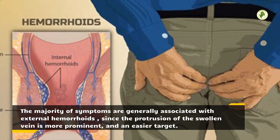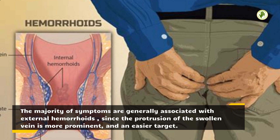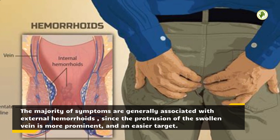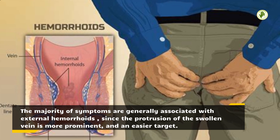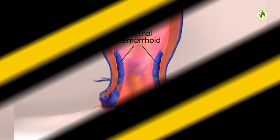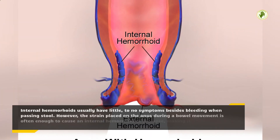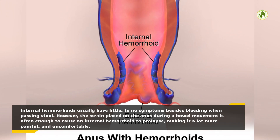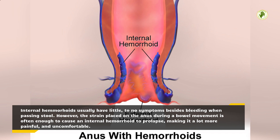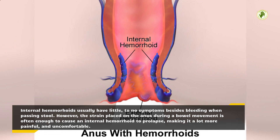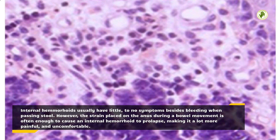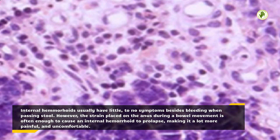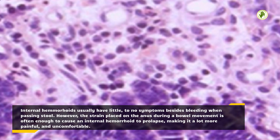The majority of symptoms are generally associated with external hemorrhoids, since the protrusion of the swollen vein is more prominent and an easier target. Internal hemorrhoids usually have little to no symptoms besides bleeding when passing stool. However, the strain placed on the anus during a bowel movement is often enough to cause an internal hemorrhoid to prolapse, making it a lot more painful and uncomfortable.